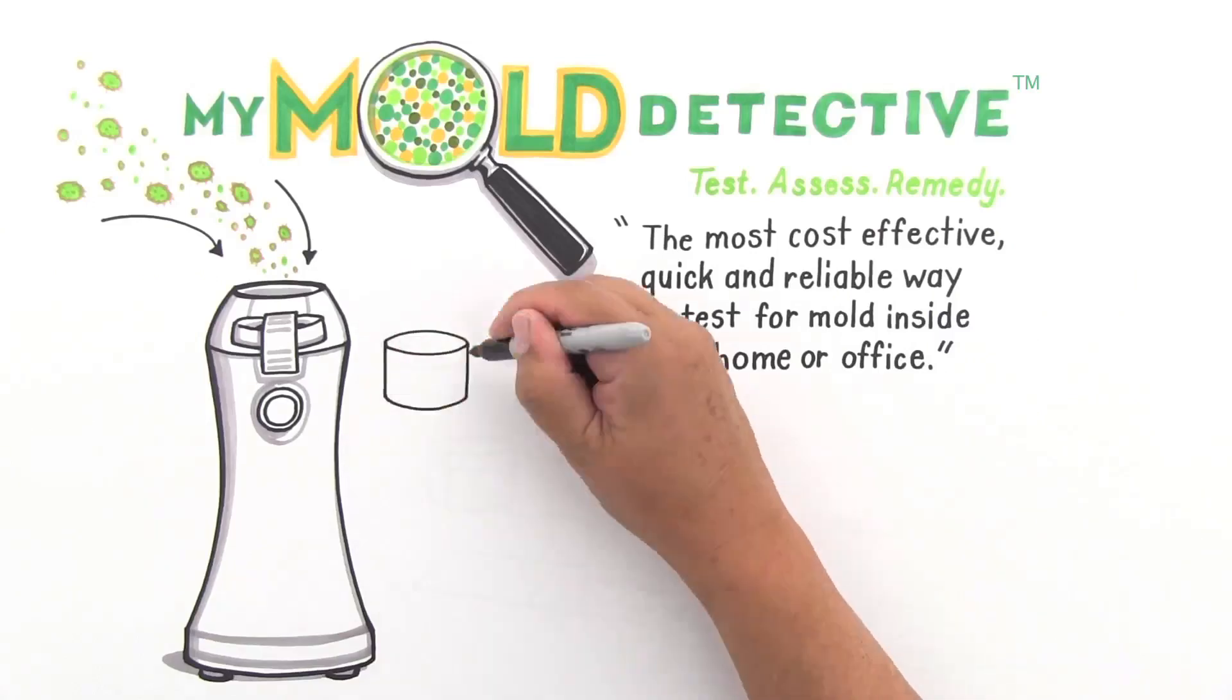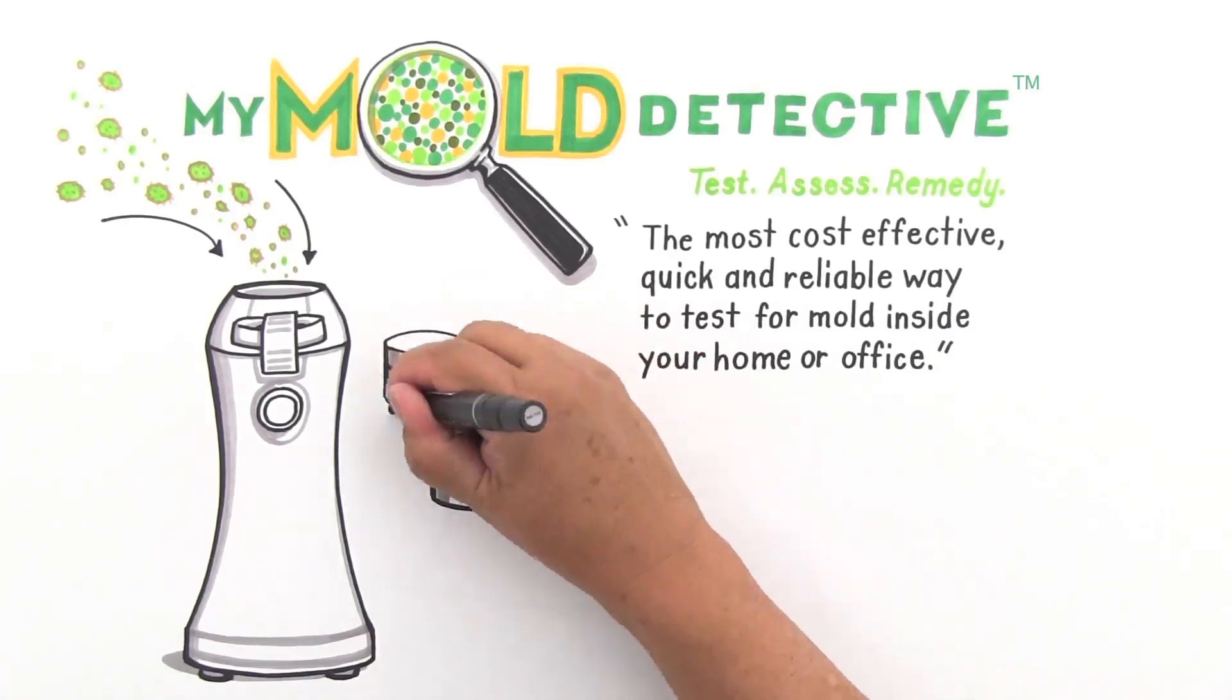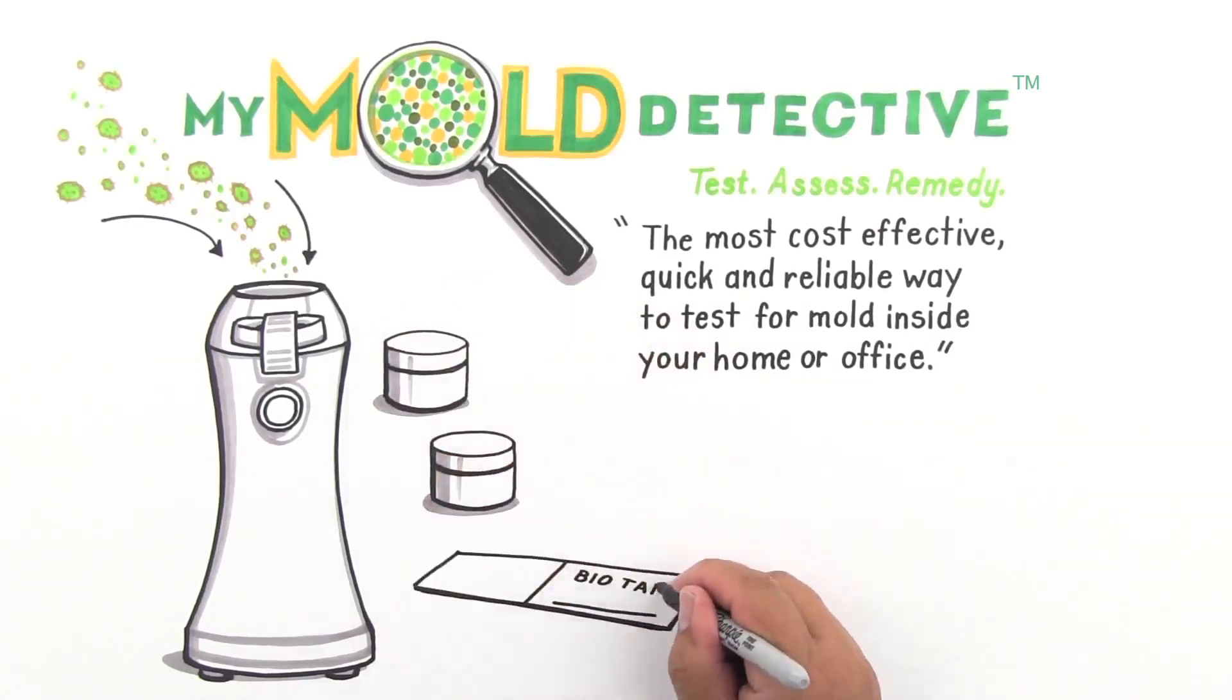My Mold Detective's mold testing system contains a validated air sampling pump, two spore trap cassettes, one biotape surface sample, and easy-to-follow instructions.